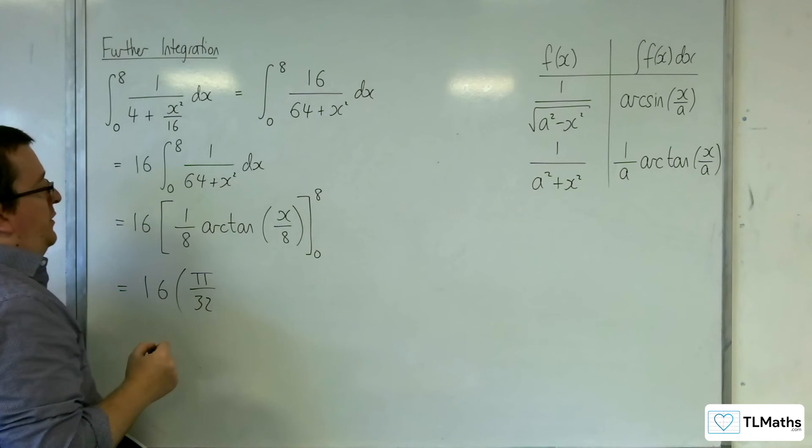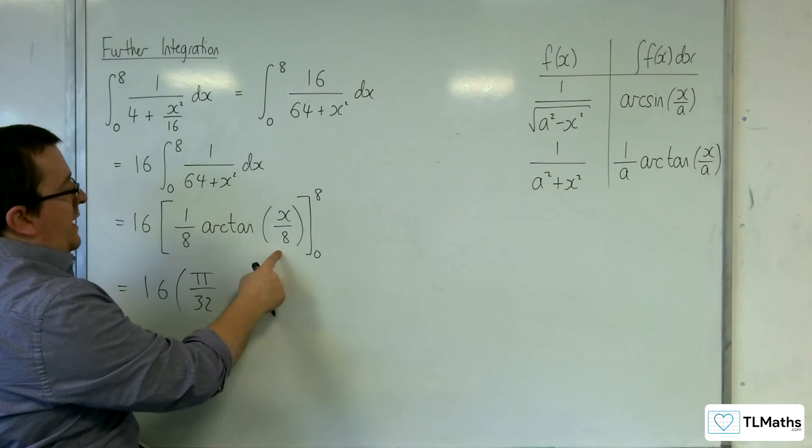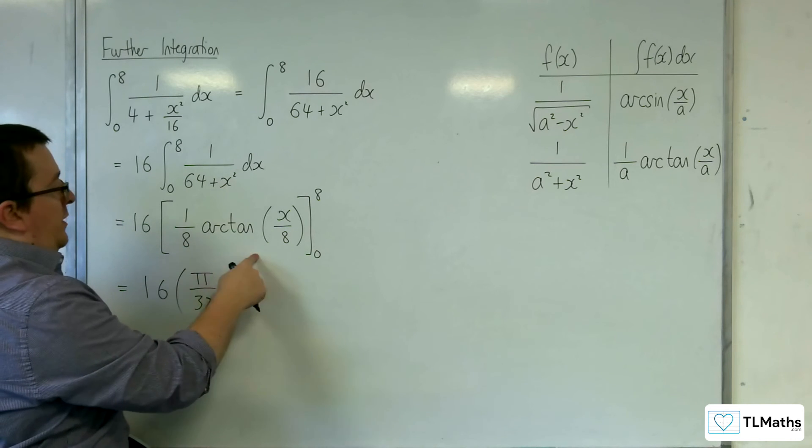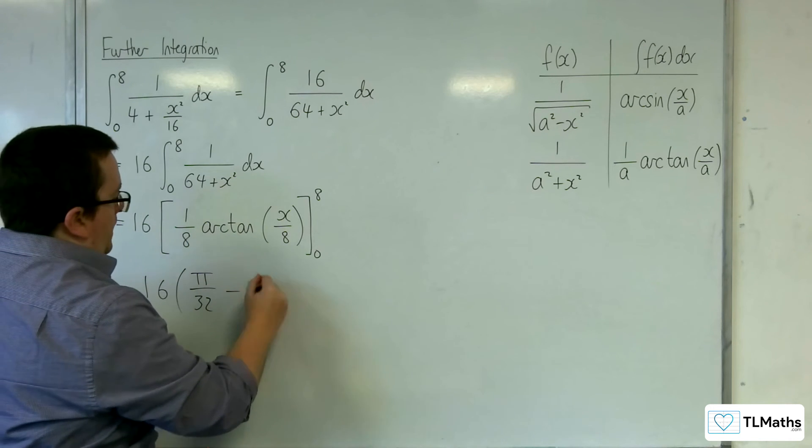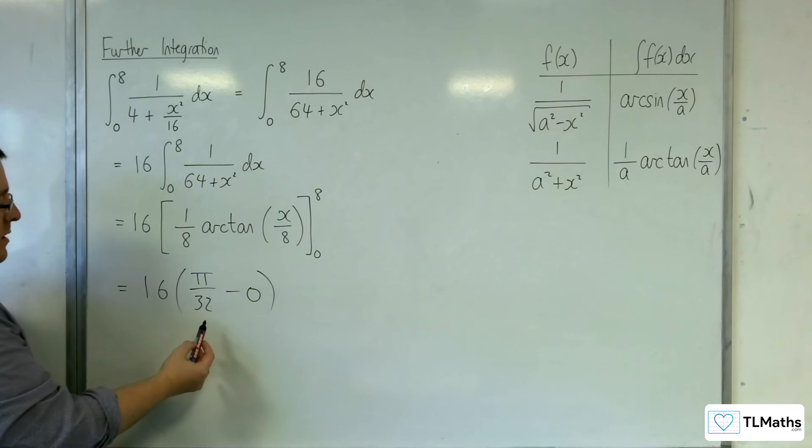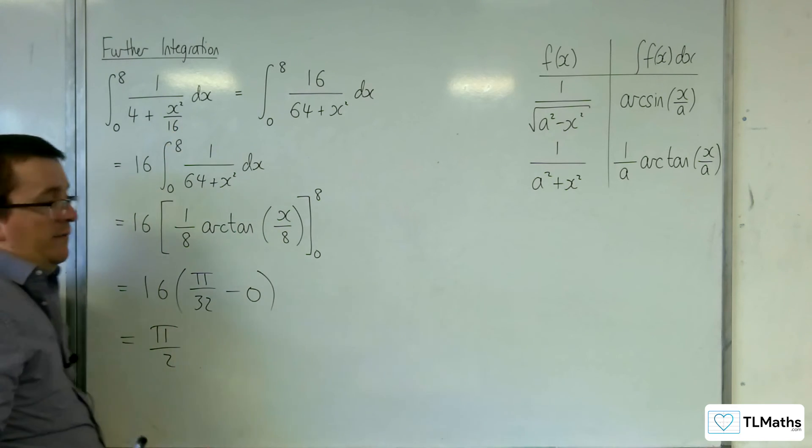And then we're going to be substituting in 0. Now arctan of 0 is just 0. So 1/8 times 0 is 0. And so we get 16 lots of pi over 32, which is pi over 2. So this integral evaluates to pi over 2.